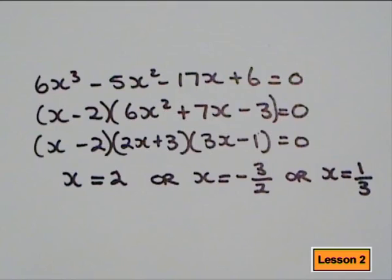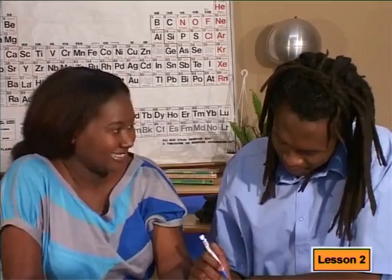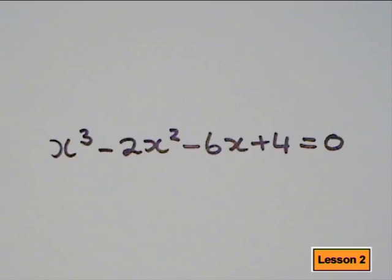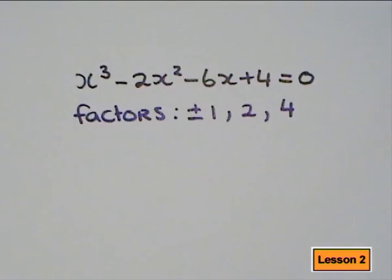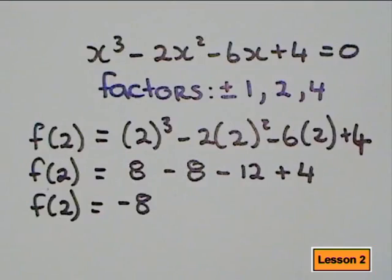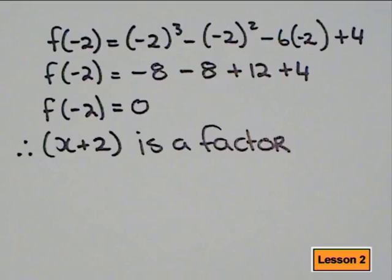All I need to do is factorize the trinomial. I let each bracket equal 0 in order to find x. Excellent, Debuhu. Do you think you can manage another one? Yeah, I think I'm up for it. Give this one a go — solve for x in this equation. The factors of 4 are plus or minus 1, 2 or 4. I'll try 1 first — it isn't a factor. I'll try 2 — 2 doesn't work either. Why don't you try a negative number? Maybe negative 2. If I substitute in negative 2, it gives me 0, which means that x plus 2 is a factor.